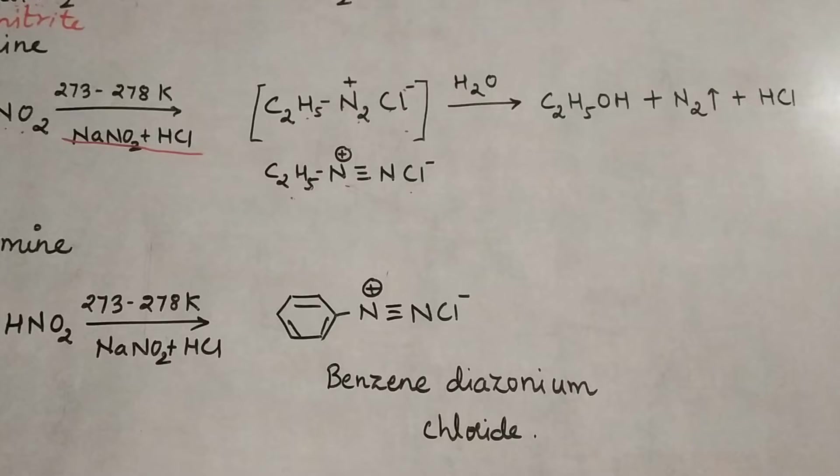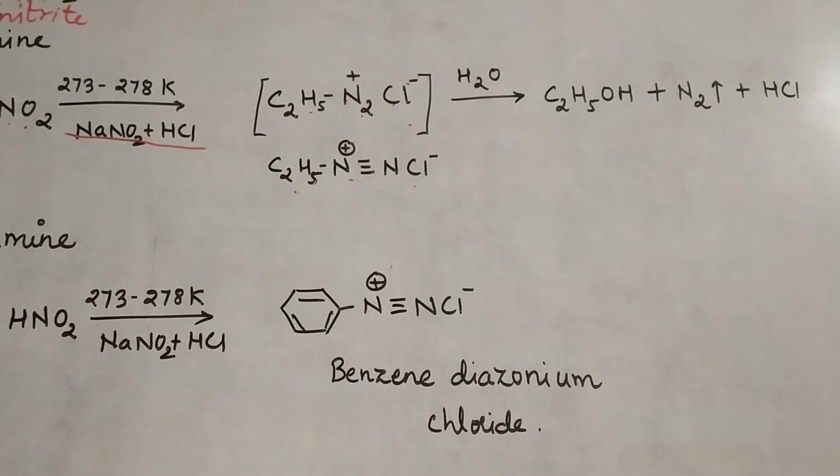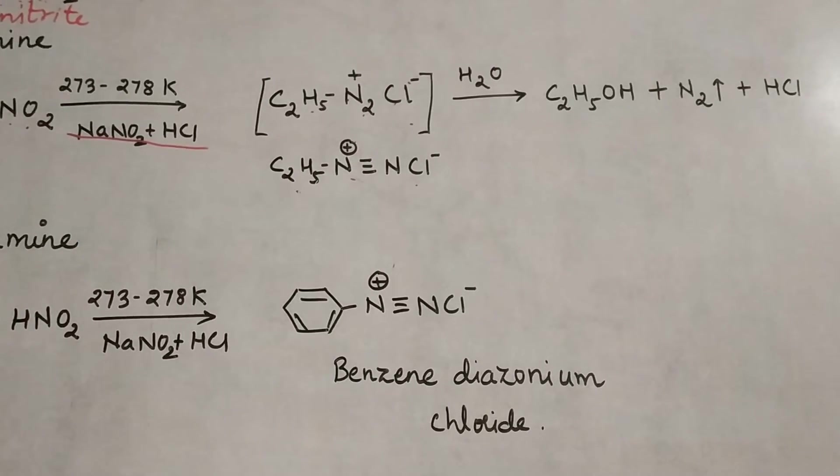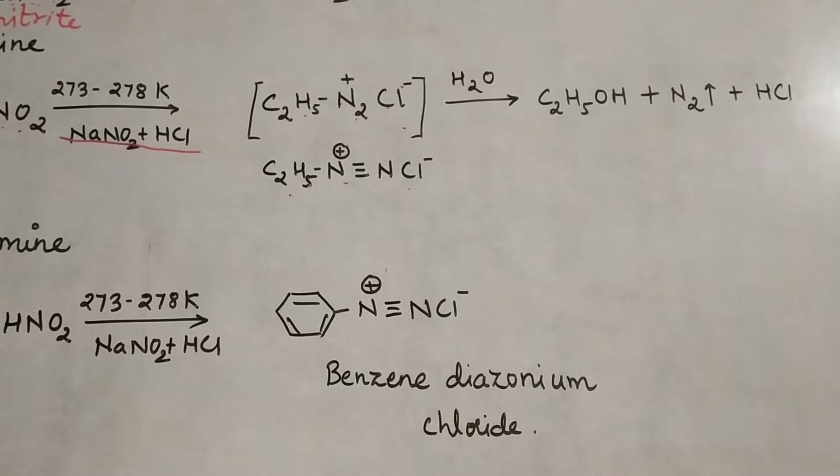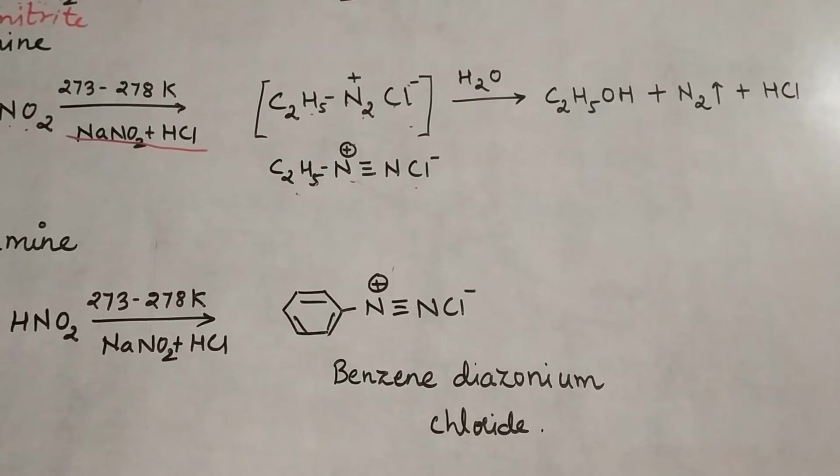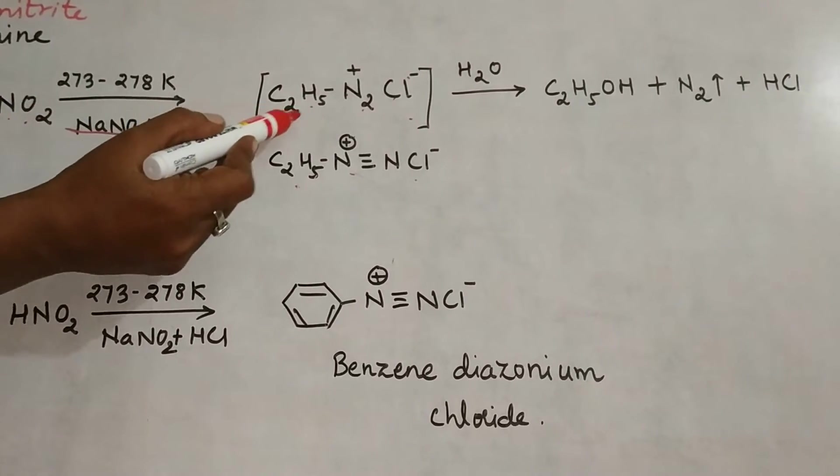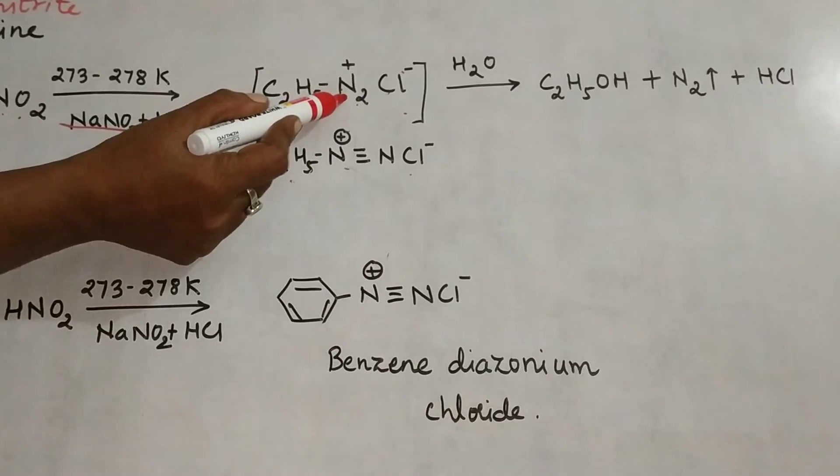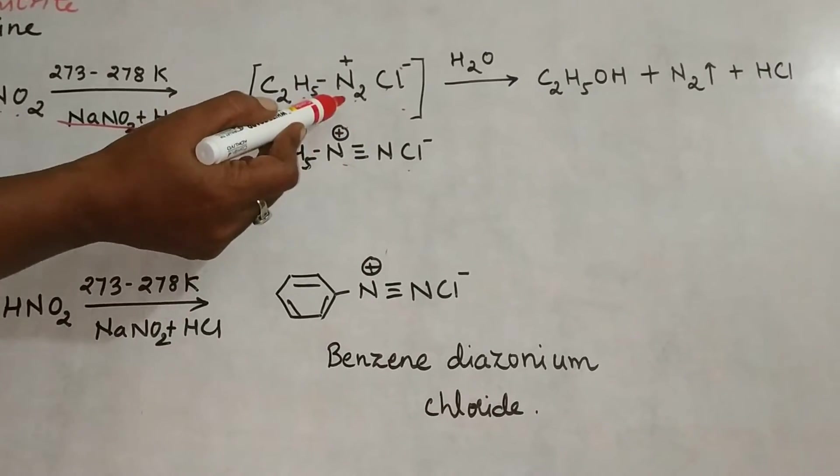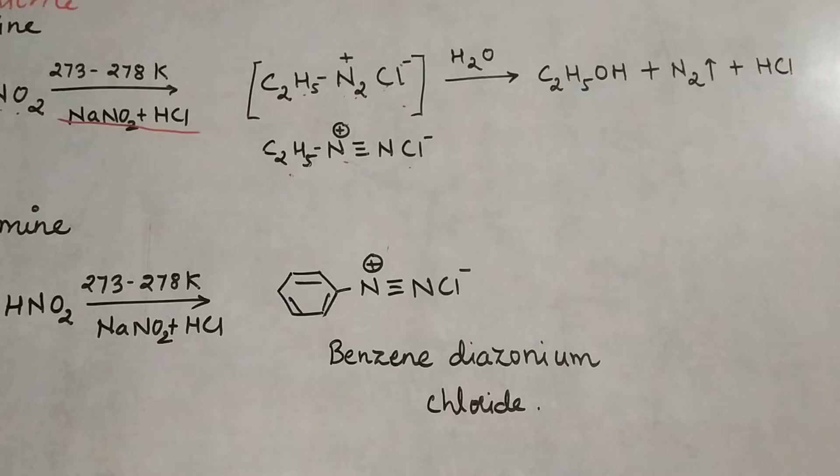This diazonium salt, ethane diazonium chloride, is shown in square brackets, indicating that the compound is unstable. When treated with water, it forms an alcohol, C2H5OH (ethanol), along with N2 gas and HCl as byproducts.